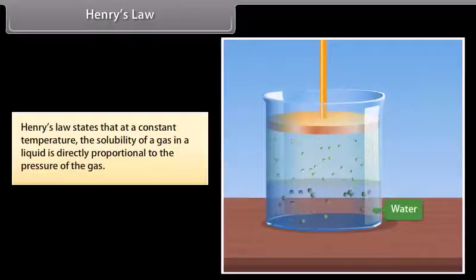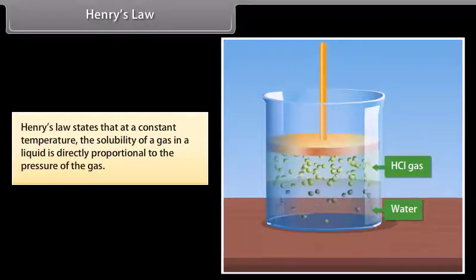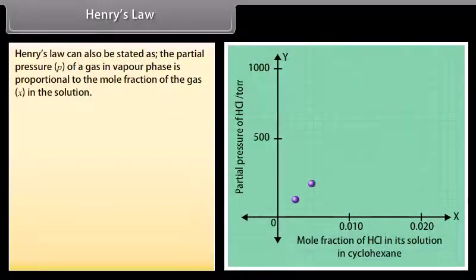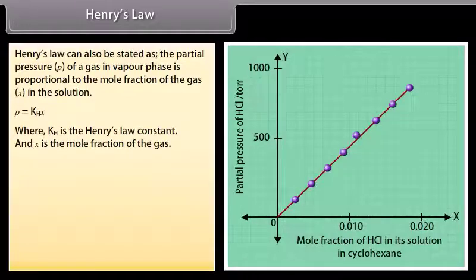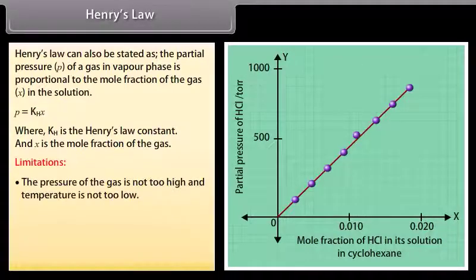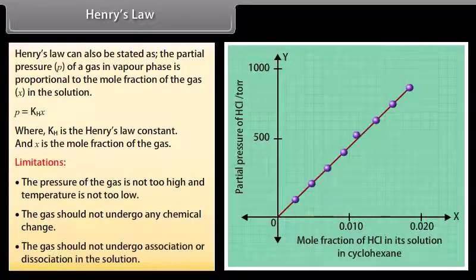Henry's Law states that at a constant temperature, the solubility of a gas in a liquid is directly proportional to the pressure of the gas. It can also be stated as: the partial pressure of a gas in vapor phase is proportional to the mole fraction of the gas in the solution: P = KH × X, where KH is Henry's Law constant and X is the mole fraction of the gas. Limitations: the pressure should not be too high and temperature not too low; the gas should not undergo any chemical change; the gas should not undergo association or dissociation in the solution.